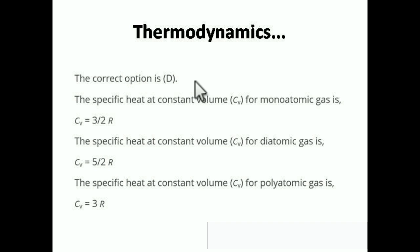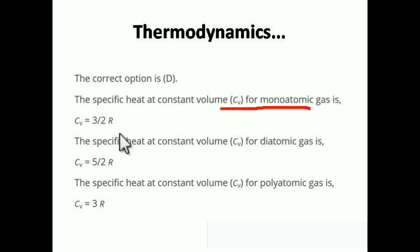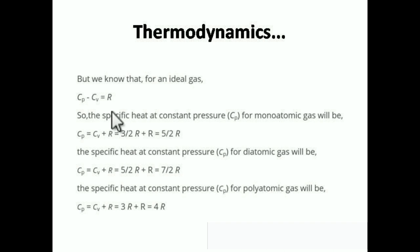For constant volume specific heat CV: CV for monatomic gas is (3/2)R, for diatomic gas it is (5/2)R, and for polyatomic gas it is 3R. Please note down these values — they can be asked directly and are also used when solving other problems.